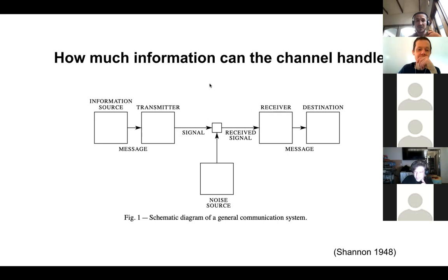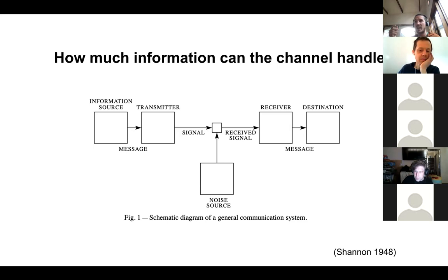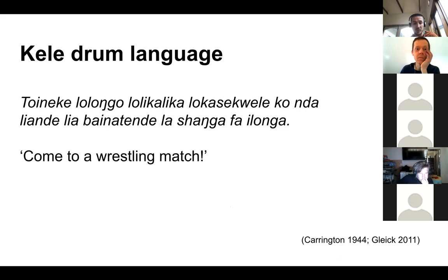Another very important concept in information theory is channel capacity — how much information can fit through a channel per unit of time. The channel we've been discussing has just two possible symbols, but the question is how many symbols can fit through per second, which ties into wiring and computing technology. Charles will explain this in more detail.